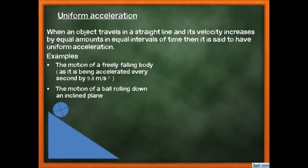Uniform acceleration is generally possible on a straight line, because acceleration also has direction, and on a curved path the direction keeps changing, so uniform acceleration won't hold. The definition: when an object travels in a straight line and its velocity increases by equal amounts in equal intervals of time, it has uniform acceleration. An example is the motion of a freely falling body.